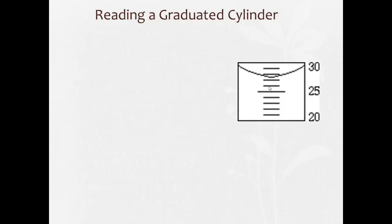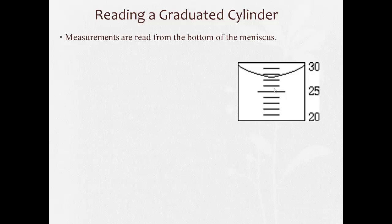A similar principle applies when reading a graduated cylinder. Always read from the bottom of the meniscus — that's the curved shape of the liquid surface. Here, if 25 and 30 are marked, each division represents one unit: 25, 26, 27, 28, 29, 30. The liquid level is more than 27 but less than 28, so we estimate that last digit — it looks about halfway — giving us 27.5 milliliters.